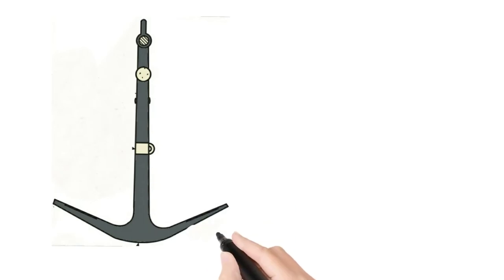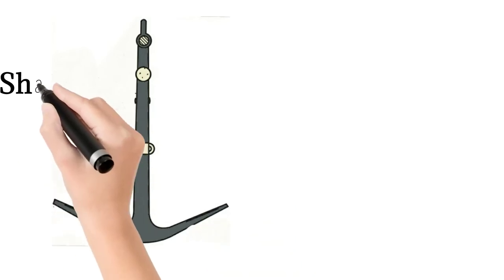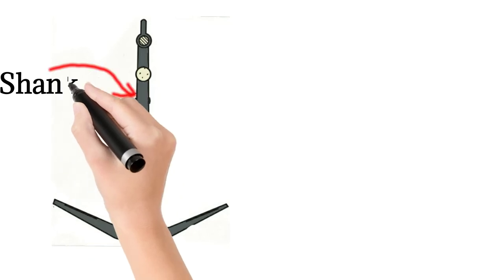So the first is shank. The vertical shaft of anchor running between the ring and the crown is the shank of the anchor.